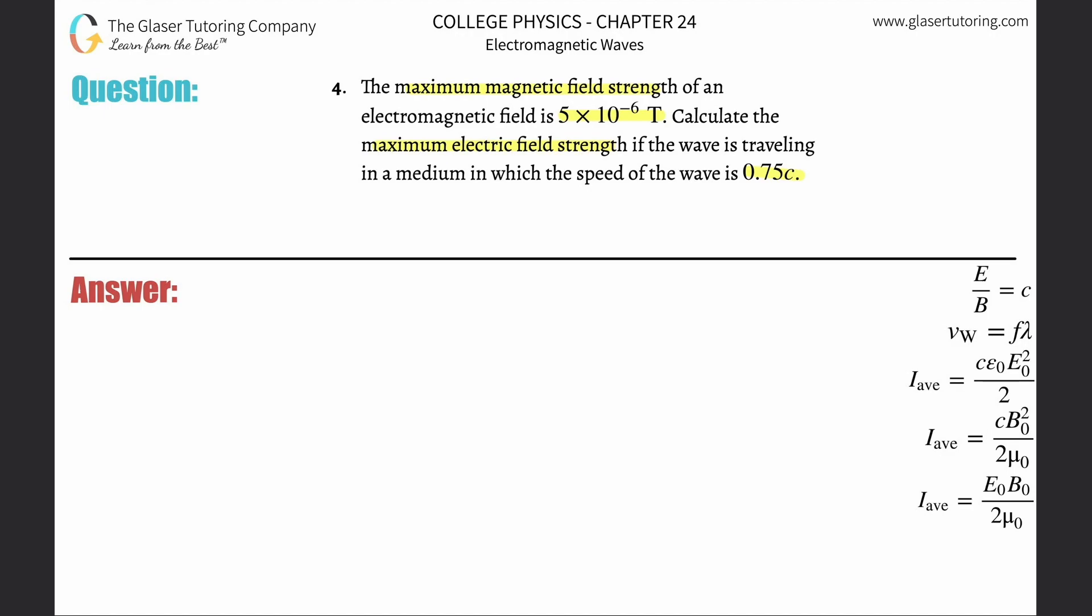All right, so we have a nice little equation that will relate the strength of the magnetic field, electric field, and the speed of the wave. We can use this: the speed of light will be equal to—and this is for electromagnetic waves—the electric field strength divided by the magnetic field strength. Now this technically would be the velocity of the wave.